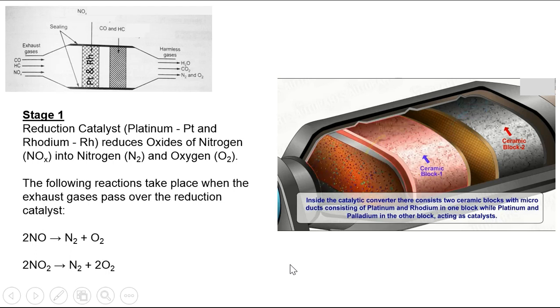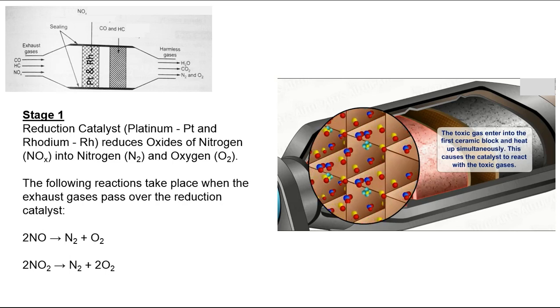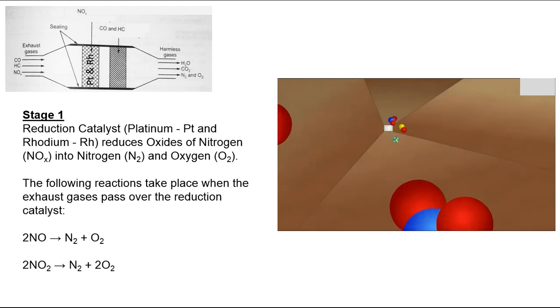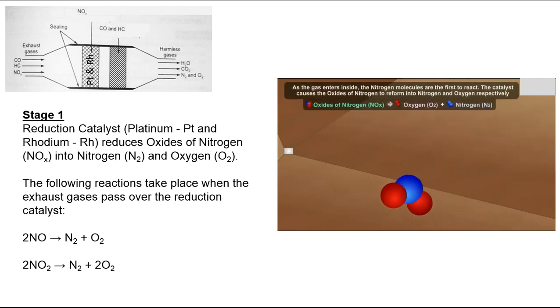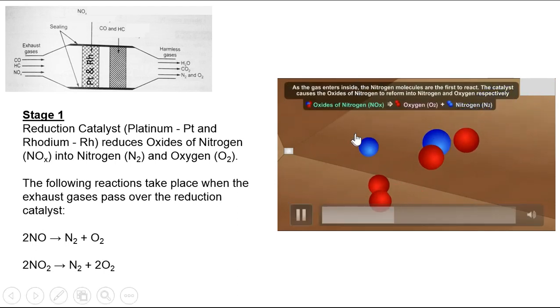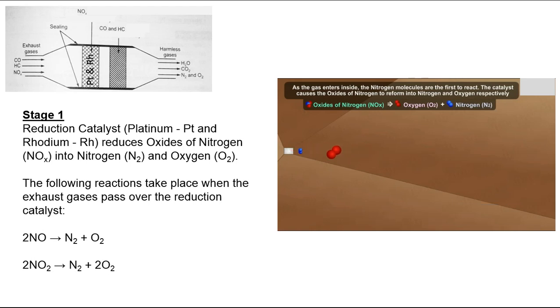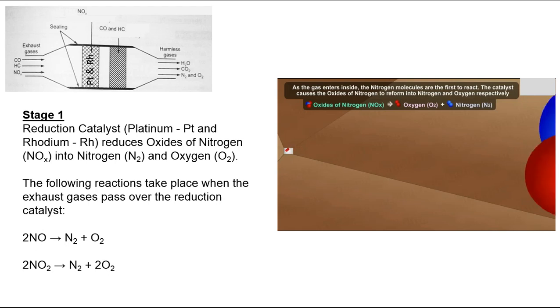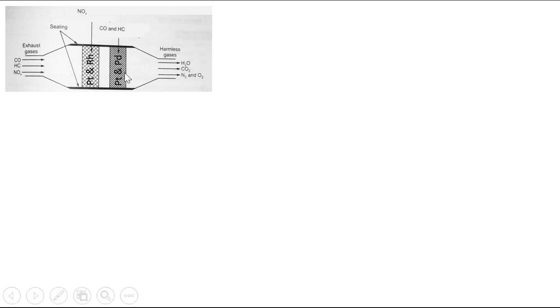The exhaust gases entering the first stage of the converter: all exhaust gases enter the first stage, where oxide of nitrogen gets converted to oxygen and nitrogen. This conversion happens because of the catalyst — platinum and rhodium — which helps the conversion process. In stage 1 it was platinum and rhodium, and now in stage 2 it is platinum and palladium.